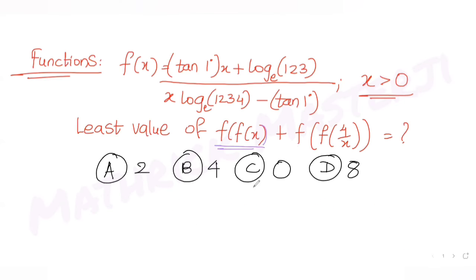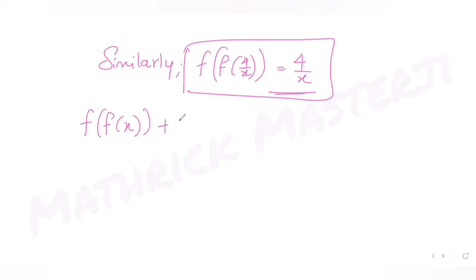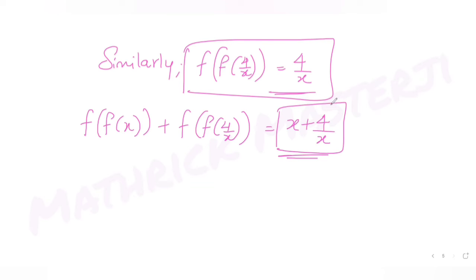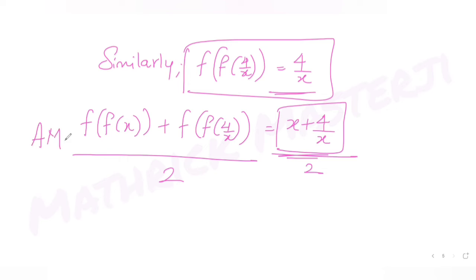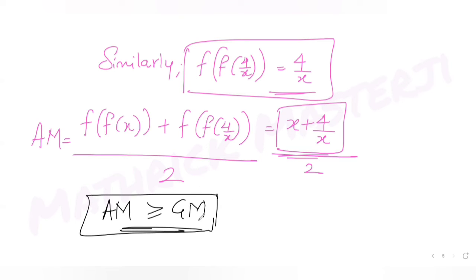Now let's address the actual question: find the least value of f(f(x)) + f(f(4/x)), which is x + 4/x. To find the minimum, we can use the AM-GM inequality: arithmetic mean is always greater than or equal to geometric mean.